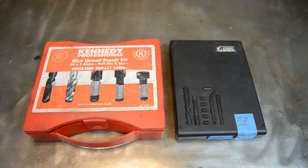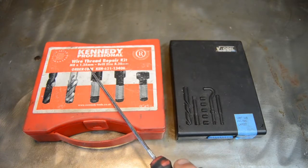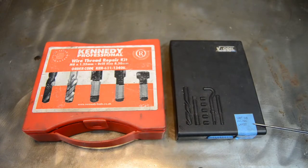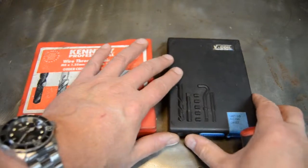These kind of kits have been around for years. We've got a couple of examples here. I've got an M8x1.25 thread insert. Here I've got an Imperial, this is a 3/8 UNF. The idea is basically the same.